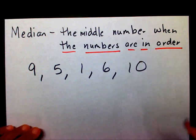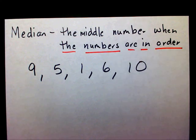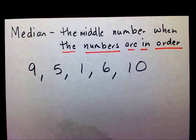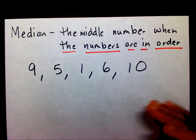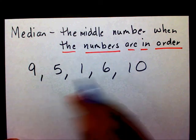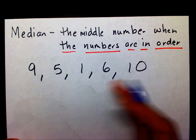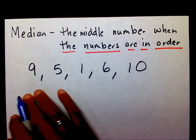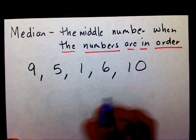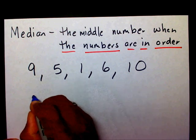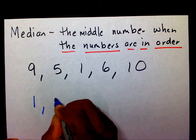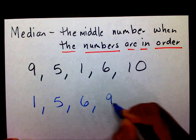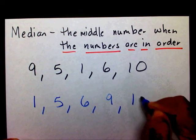The first thing you need to do is put your numbers in order from least to greatest — or greatest to least, it doesn't matter, but most people go from least to greatest. So: 1, 5, 6, 9, and 10.